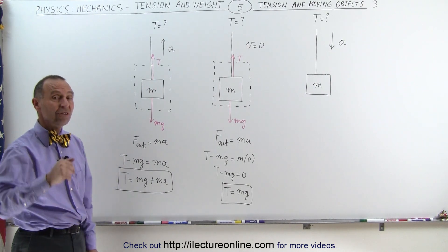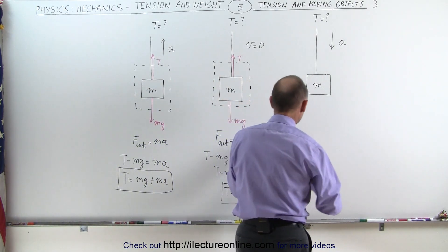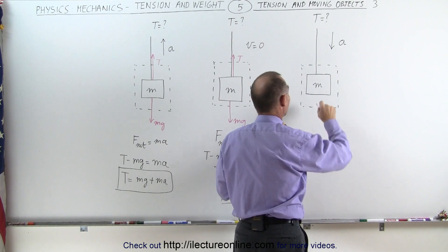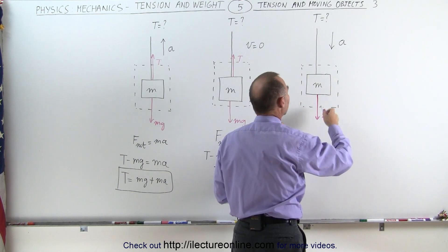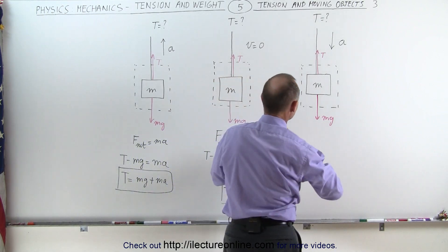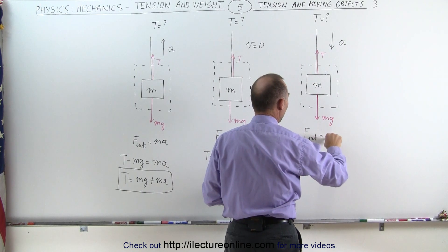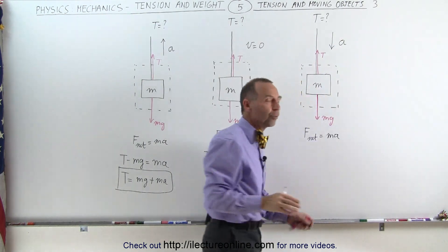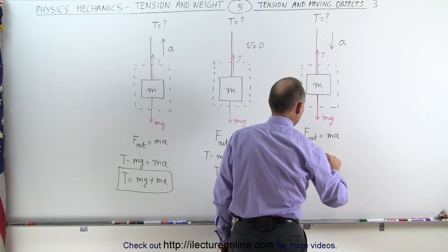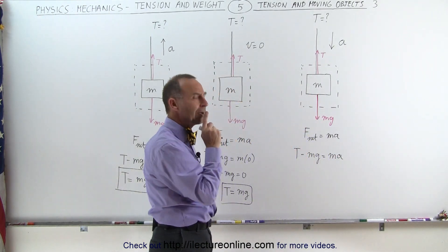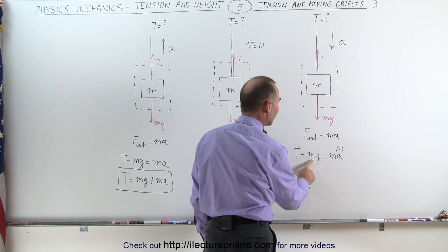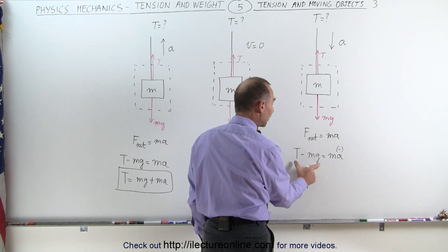Now let's look at our third situation: the object with acceleration downward. Again we draw a free body diagram and identify all the forces — the force of gravity pulling it down and the tension pulling upward. We use F net equals ma. In this case the acceleration is downward, so we have a negative acceleration. The net force equation is tension minus weight equals mass times acceleration, and we must be careful — the acceleration is a negative quantity.